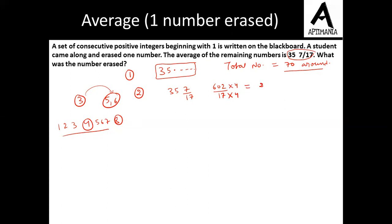So the numerator becomes 240 and the denominator becomes 68 when we multiply by 4. We can see that 68 is the number close to 70. When a student erases a number, the remaining count is 68. So before erasing, we had numbers from 1, 2, 3, 4, 5, 6 all the way till 69. When the student erases one number, the remaining numbers are 68, and we get that average.